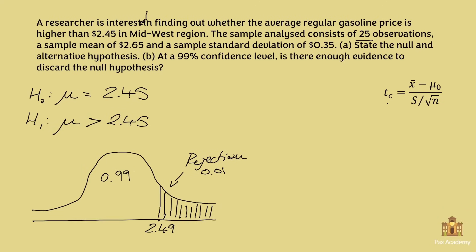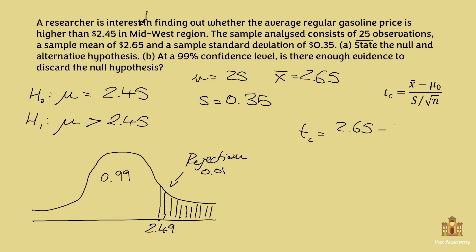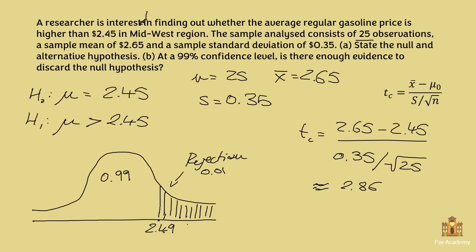So our critical value is 2.49 — positive, since we're on the right side. Now we plug our known values into the formula: sample size n=25, sample mean x̄=2.65, sample standard deviation s=0.35, and hypothesized mean 2.45. The t value is (2.65 minus 2.45) divided by (0.35 divided by the square root of 25), which gives approximately 2.86. Since 2.86 is indeed inside the rejection region, we reject H0. In other words, the price is indeed higher than $2.45.